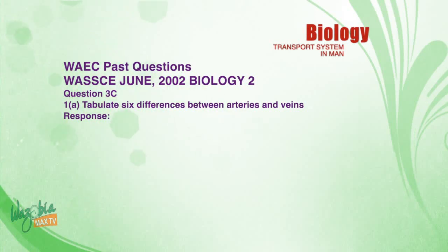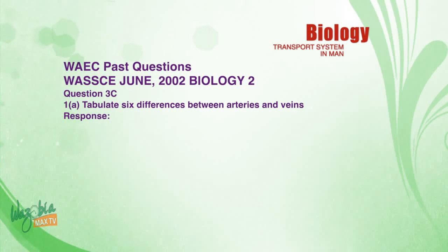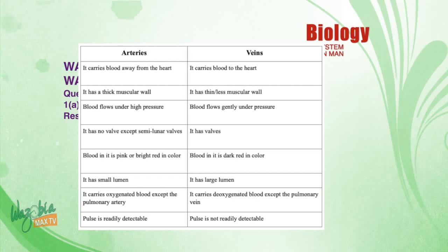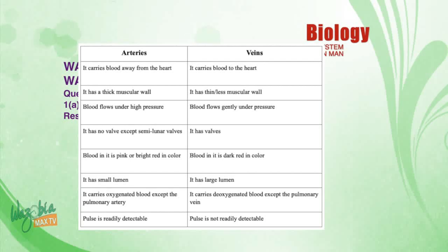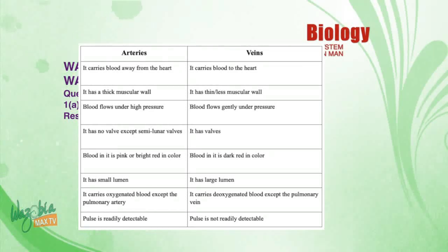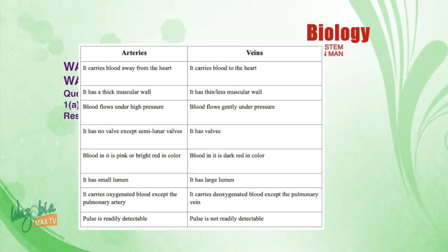Now let's look at a past exam question — WAEC June 2012/2022, Question 3C: Tabulate six differences between arteries and veins. Response in tabular form — Arteries vs. Veins: arteries carry blood away from the heart; veins carry blood to the heart. Arteries have thick muscular walls; veins have thin or less muscular walls. Blood in arteries flows under high pressure; blood in veins flows under low pressure.